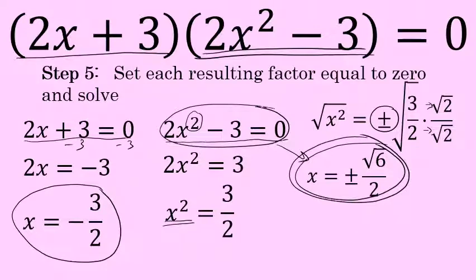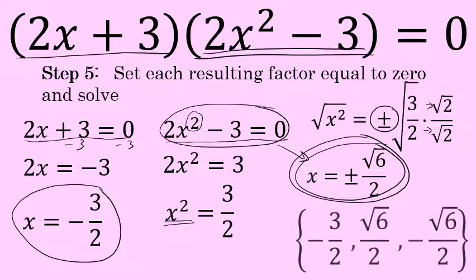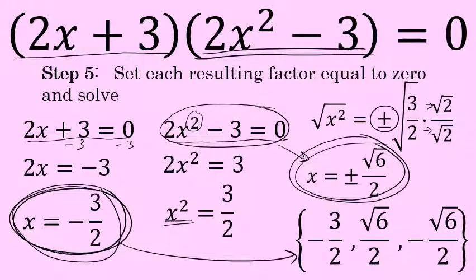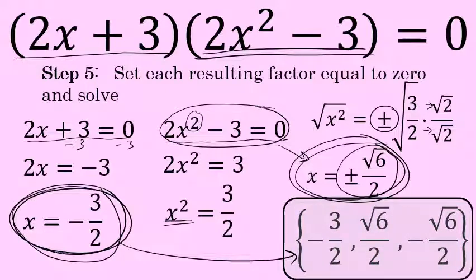Those are the other two solutions to the original equation. We began with a third-degree equation, which has three solutions, and we've now found all three: x equals negative 3 halves, positive square root of 6 over 2, and negative square root of 6 over 2.